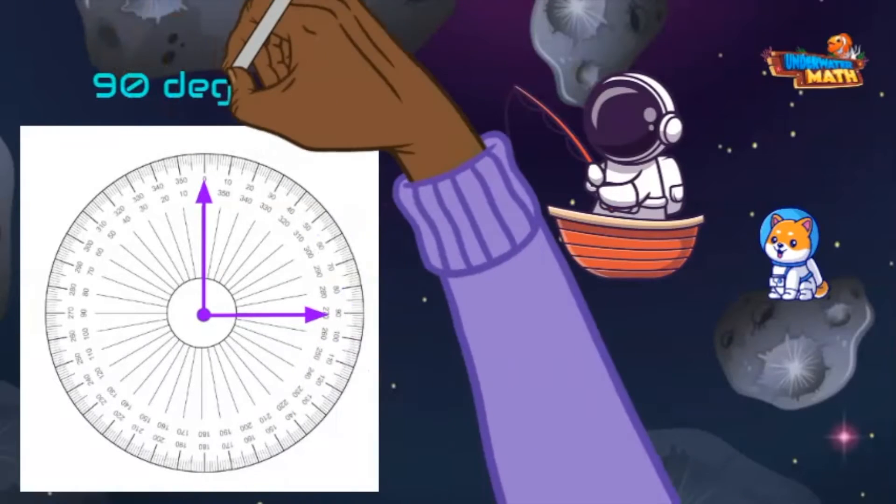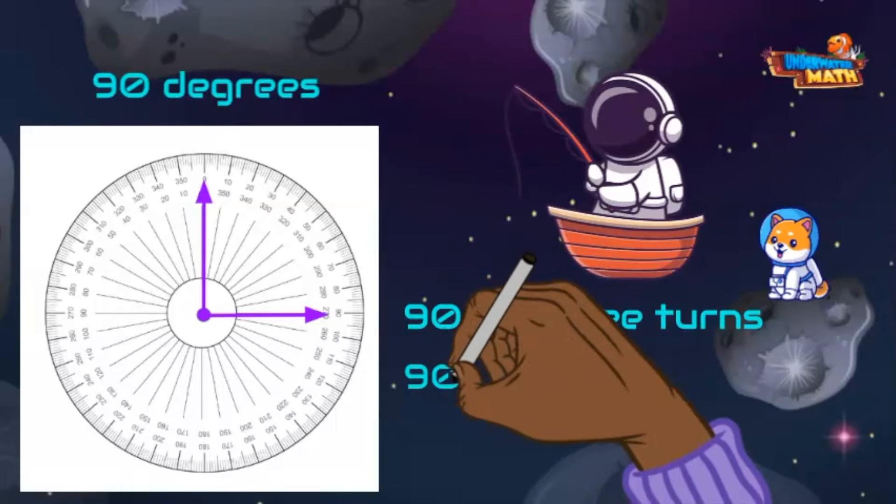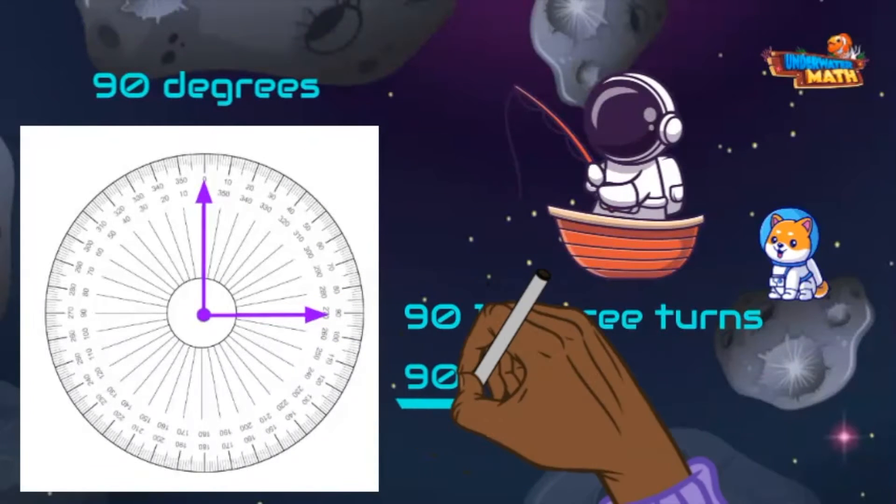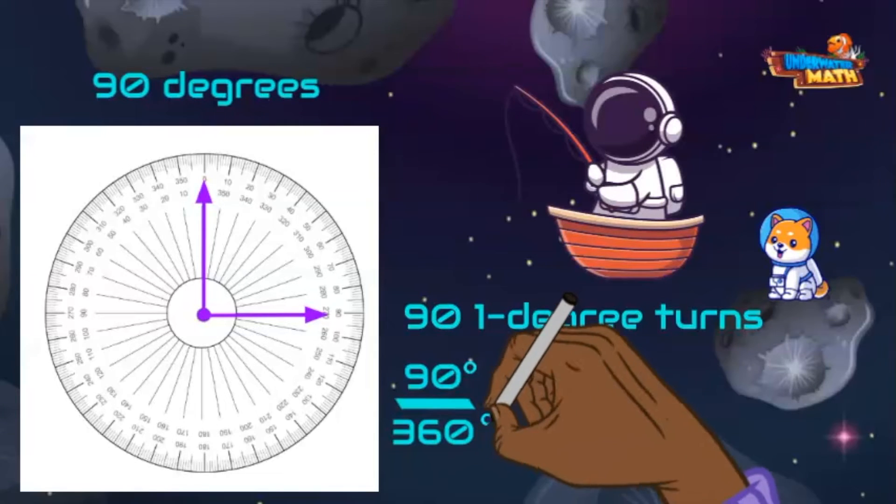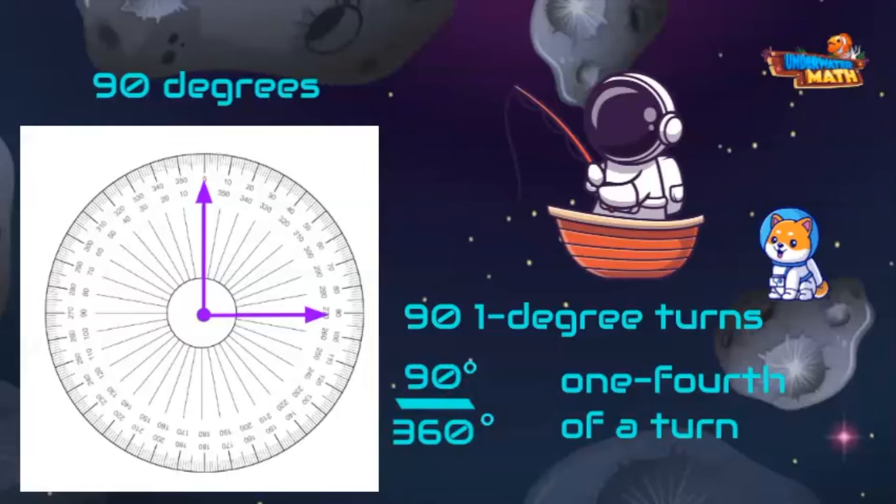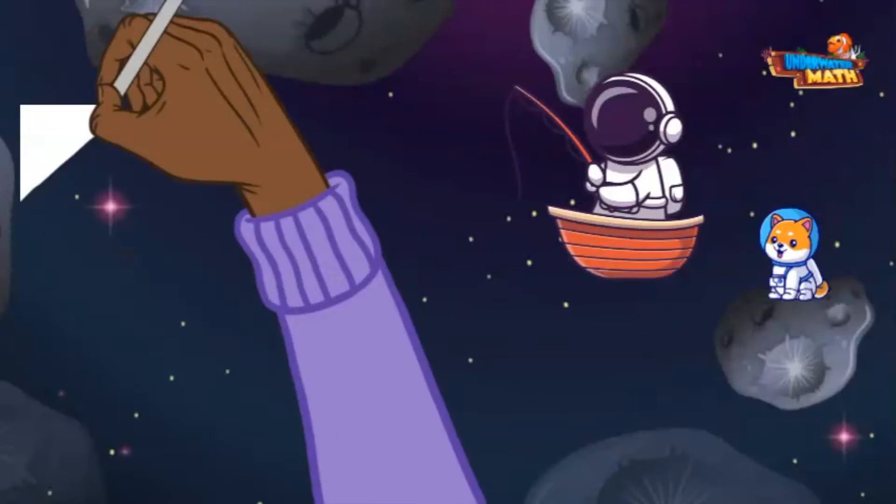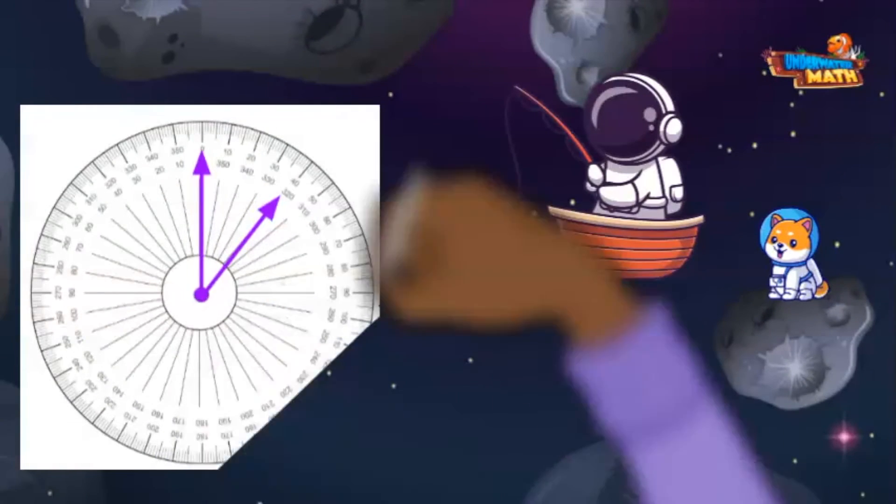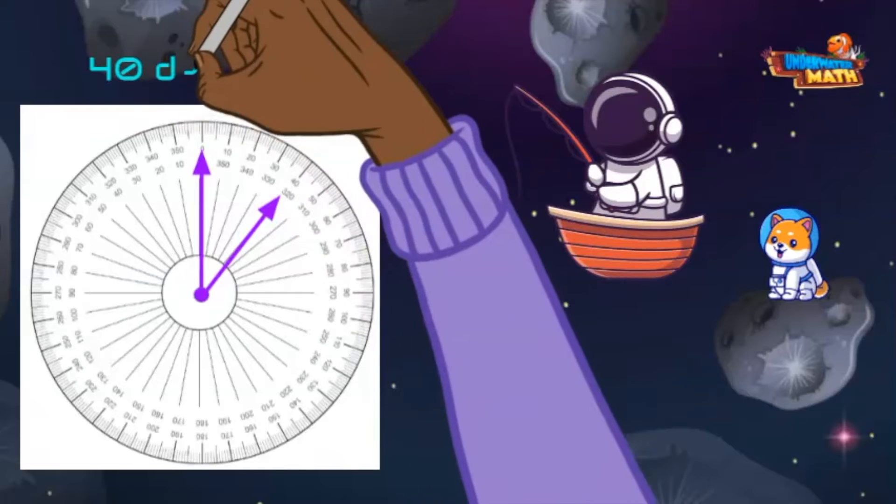Wowzer, I have a bite! A 90-degree angle has 90 one-degree turns. It is 90 degrees out of 360 degrees. It also looks like what fraction of a circle? That's right, one-fourth. A 90-degree angle is one-fourth of a turn: 90 degrees over 360 degrees, or simplified to one-fourth. Whoa, who knew angles and circles were so closely related?